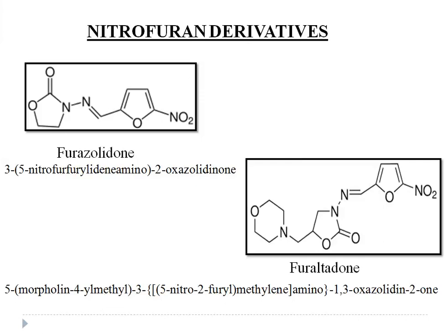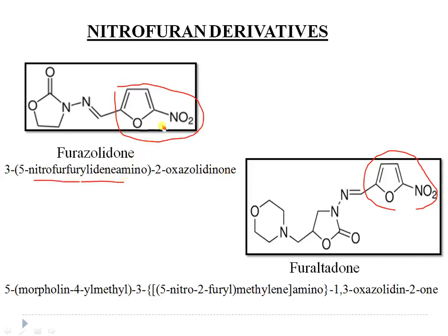Two synthetic nitrofuran derivatives used as antibacterials are furazolidone and furaltadone — both drugs contain the nitrofuran moiety. Furazolidone has the IUPAC name 5-nitro-2-furfurylideneamino-3-(2-oxazolidinone), where the oxazolidinone is substituted at the third position on the nitrofuran ring.